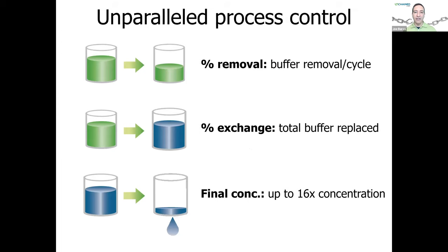By automating it, you get a lot of control over your process. You can control percent removal per cycle — if you have low protein concentration you may completely drain the well, whereas at high concentration you may do smaller replacement per cycle. For percent exchange, you can stop at a low percent exchange like 96%, or go higher to 99% or above. For concentration, you don't have to concentrate to the initial volume — you can concentrate up to 16-fold, or just concentrate without any buffer exchange.